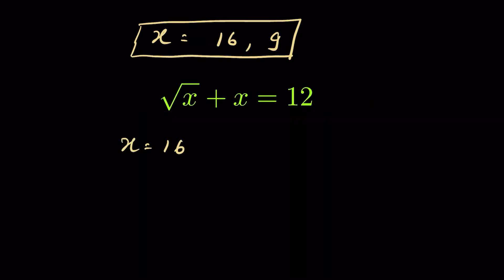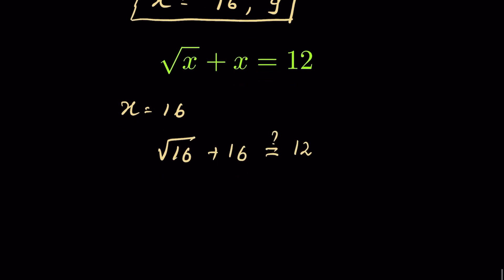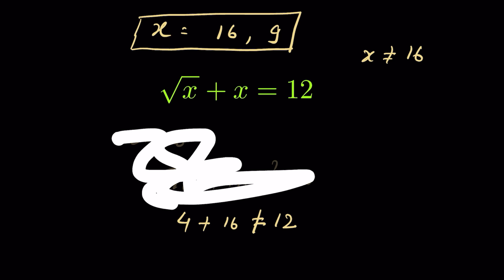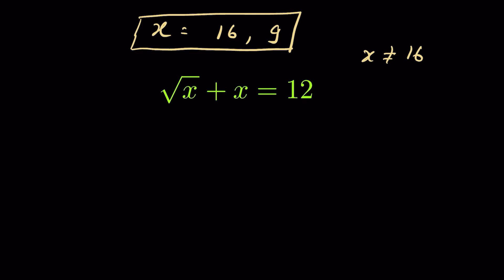Let's verify the answer. When x equals 16, we have square root of 16 plus 16, which should equal 12. Square root of 16 is 4, and 4 plus 16 is 20, which is not equal to 12. So x cannot be 16.